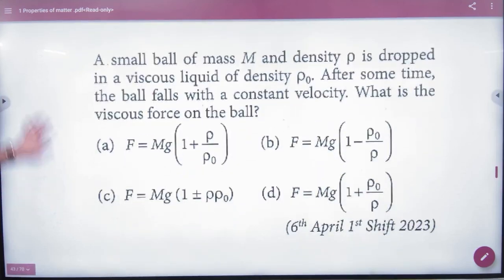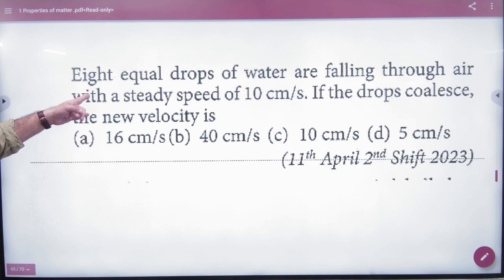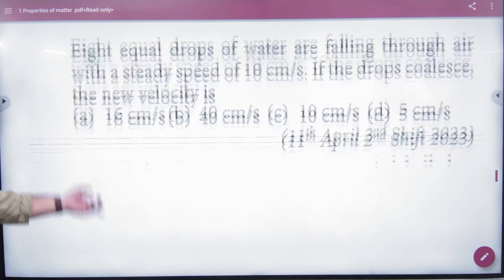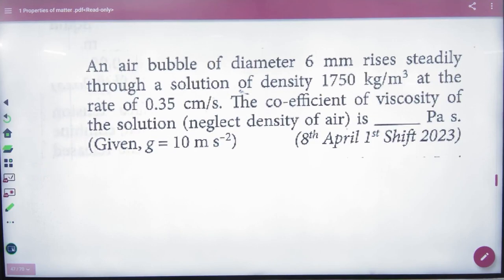Eight equal drops with steady speed 10 combine. Find the new terminal velocity. When drops combine, we use the same approach - determine which values change while the rest remain the same.